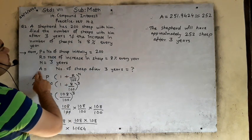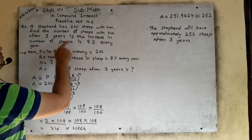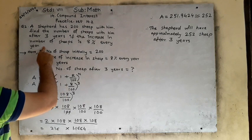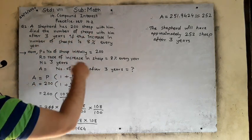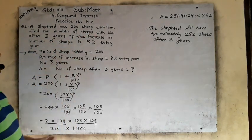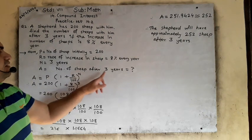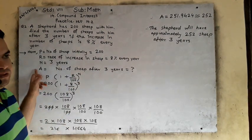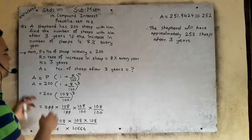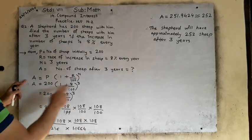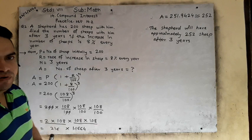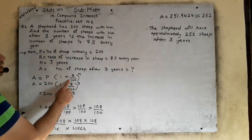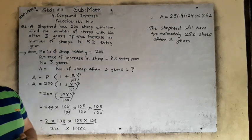Now, what we have to find — find the number of sheep with him after 3 years. We have to find the number of sheep after 3 years, which means we have to find A. So after 3 years, we know that the formula for amount by compound interest is equal to principal multiplied by (1 + R upon 100) raised to N.